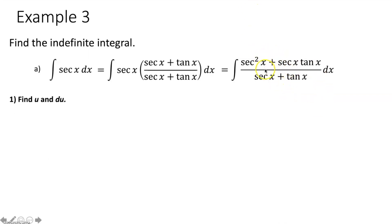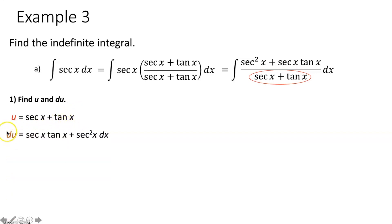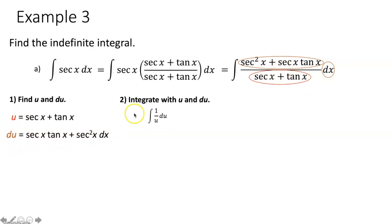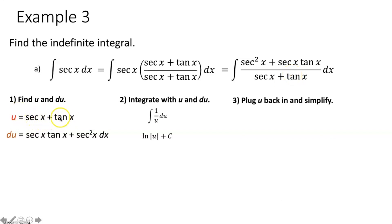Set u equal to the denominator: sec x + tan x. The derivative du/dx gives us: derivative of sec x is sec x tan x, and derivative of tan x is sec² x. So du equals (sec x tan x + sec² x) dx — exactly what's in the numerator. Substitute u for (sec x + tan x) and du for (sec x tan x + sec² x) dx. The new integral is just 1 over u du, which equals natural log of |u| plus c. Substitute back: the integral of sec x dx equals natural log of |sec x + tan x| plus c — exactly what we said at the beginning.